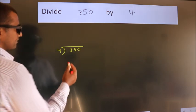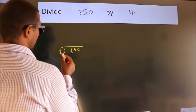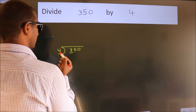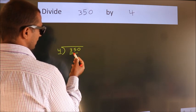Next, here we have 3, here 4. 3 smaller than 4, so we should take 2 numbers, 35.